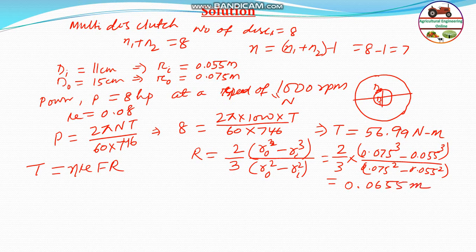The mean radius equals 0.0655 m. This formula is based on uniform pressure assumption. Since nothing specific is given about wear or pressure conditions, we use the uniform pressure condition.